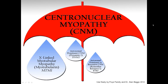The next subtype discovered after that involves the RYR1 gene, which causes a problem with ryanodine receptor 1. This form can be either autosomal dominant or autosomal recessive, which can be addressed in other videos if needed.